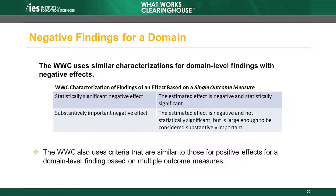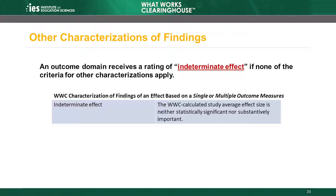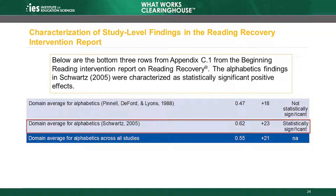The WWC uses criteria similar to those for positive effects when characterizing negative effects for domain-level findings based on a single outcome measure or multiple outcome measures. When the main findings in a study outcome domain do not meet the criteria for either positive or negative effects, the WWC will characterize the findings as indeterminate. Returning to the Reading Recovery Intervention Report, the findings in the Alphabetics domain for Schwartz 2005 were characterized as statistically significant positive effects. The average effect size was 0.62 standard deviations, which is positive, and the WWC determined that this average effect size is statistically significant.